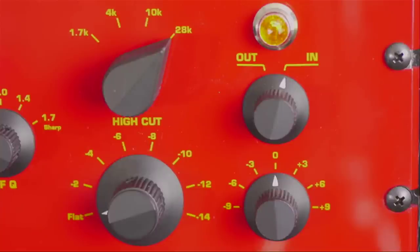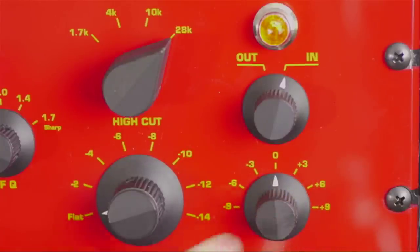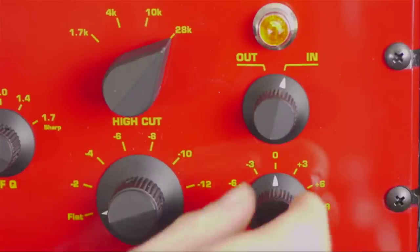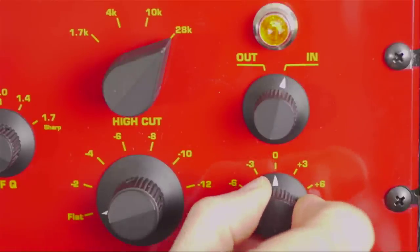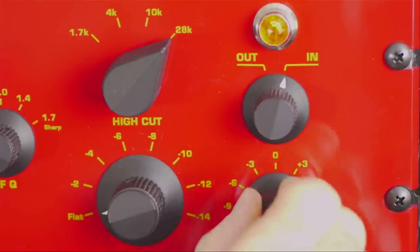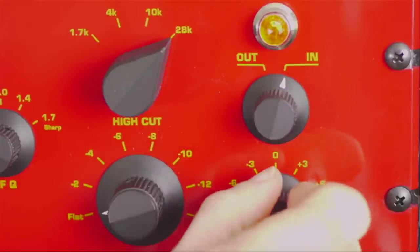There are two other controls on the VT4 and the VT5 that I should mention. One of them is the input level control. And you can see in the middle it's set at zero. And that means that the level that goes in is exactly the same as the level that goes out. Now that's assuming that there's no equalization switched in on the unit. However, if you're using large amounts of boost, the output level may be too high for whatever's following the VT4 or VT5, so you might want to back it down.